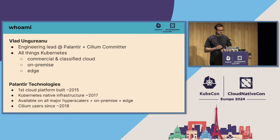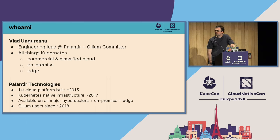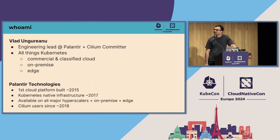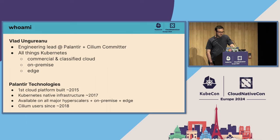My name is Vlad. I'm an engineering lead at Palantir. I've been with Palantir for almost nine years now and a Cilium committer since 2019. At Palantir, I mostly work with the teams that manage our Kubernetes offerings. We deploy on commercial cloud, classified cloud, on-premise, and edge. We're developing software that helps commercial entities and governments make better sense of their data. This talk is going to be our history on how we picked up Cilium, how we were using it, and how our journey evolved with the Cilium community.